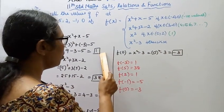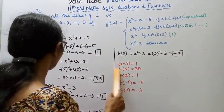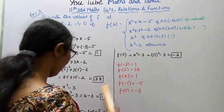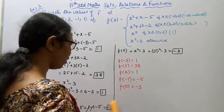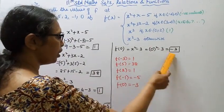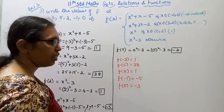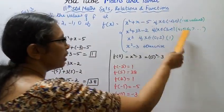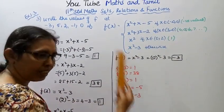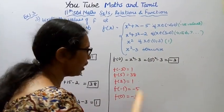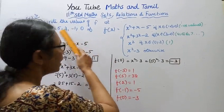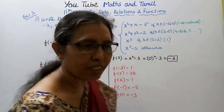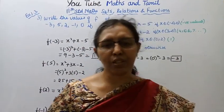Summary of results: f of minus 3 equals 1, f of 5 equals 38, f of 2 equals 1, f of minus 1 equals minus 5, f of 0 equals minus 3.